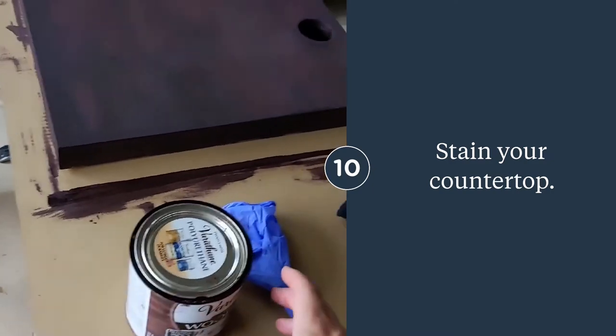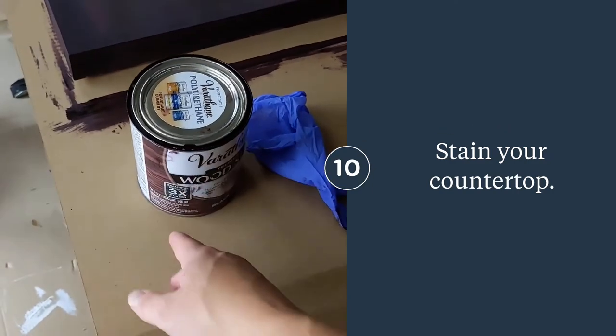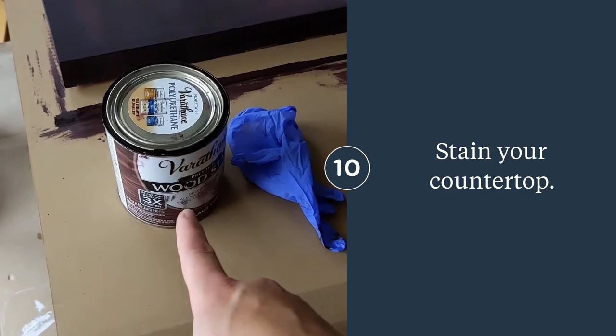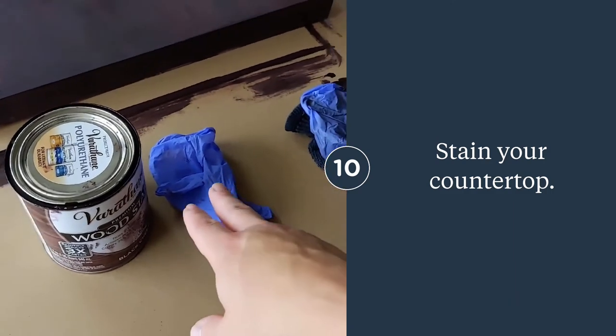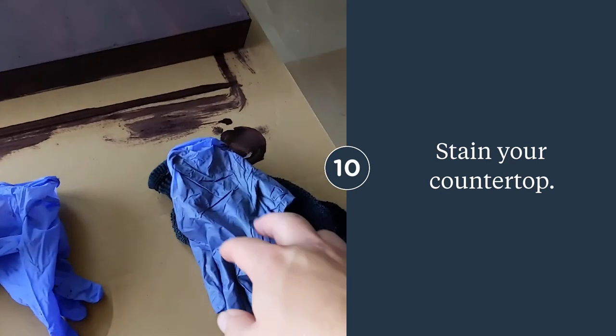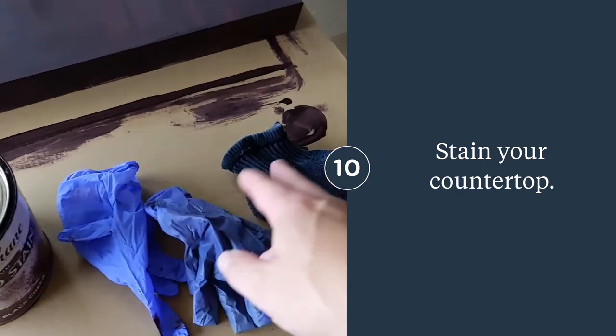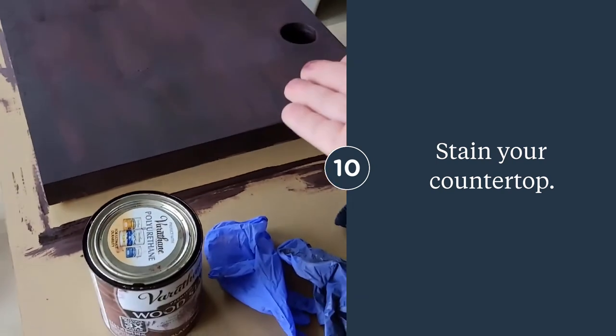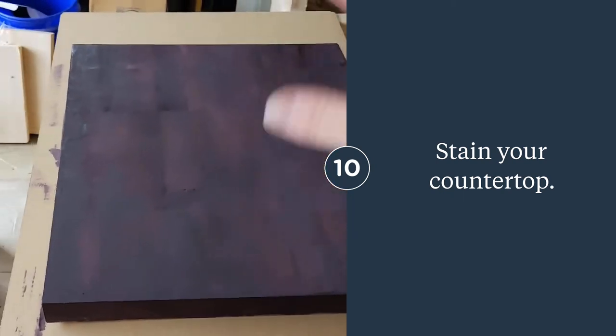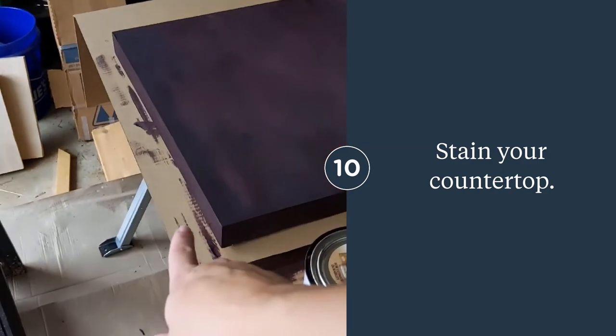I have the butcher block stained now with Black Cherry Varathane wood stain. What I do is I put two gloves on, one on each hand, and then I use an old sock to dip in the stain and wipe on. So this is the bottom of the butcher block. We're going to do the bottom first, and I did the sides.